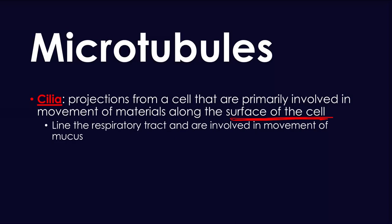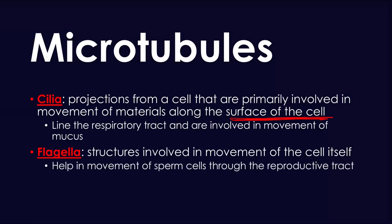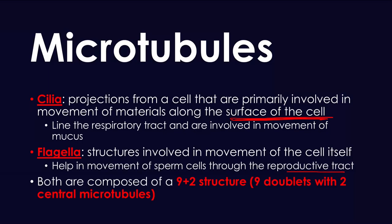Cilia is very important, and you need to understand that cilia has no role in the actual movement of the cell itself — it plays a role in movement of other things along the surface of a cell. Then you have flagella, which are structures involved in the movement of the cell itself. For example, the flagella is what helps sperm move through the reproductive tract.